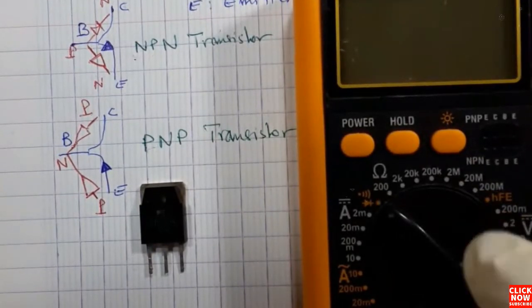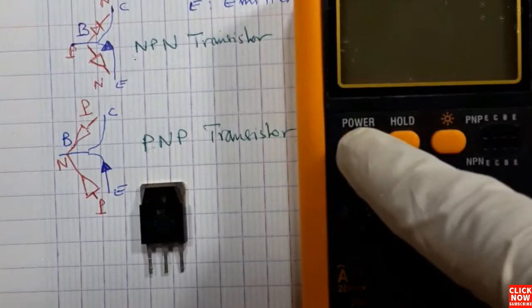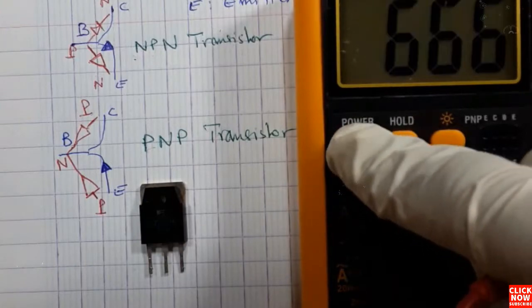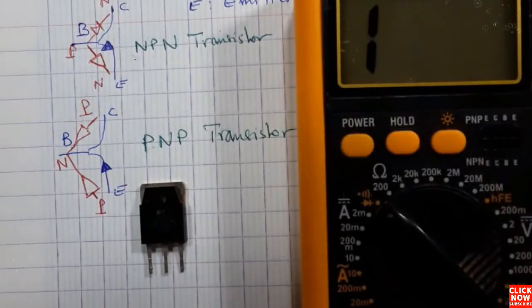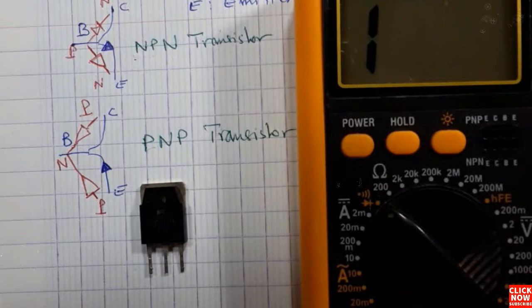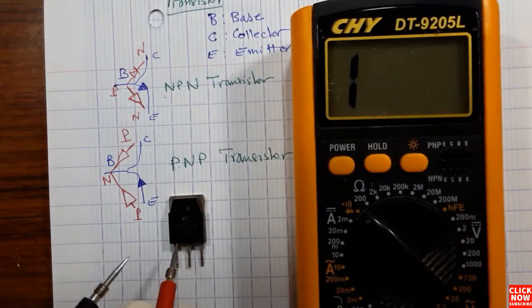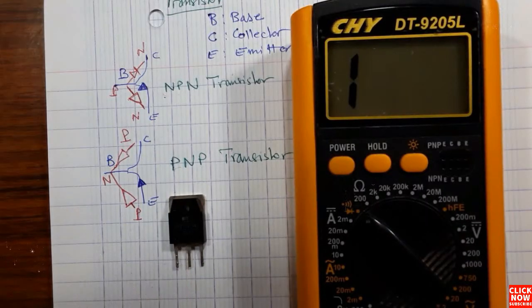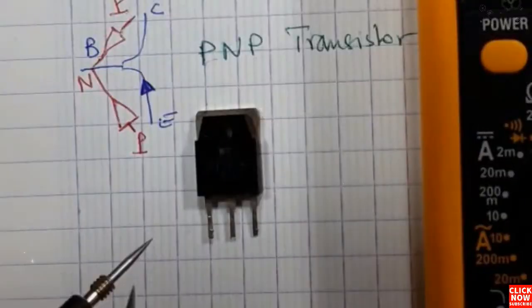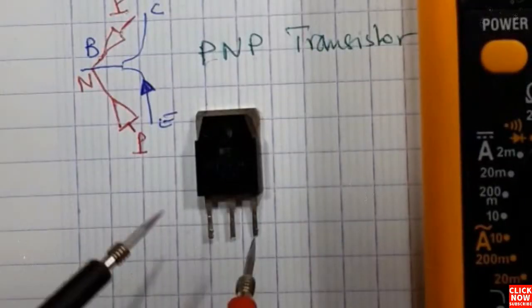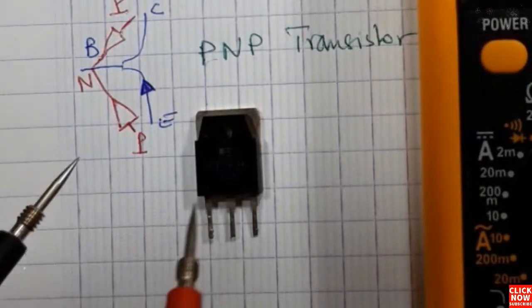First, we're going to select the continuity option in the multimeter, or the buzzer option, as you can see here on the multimeter. And we're going to first locate the base of the transistor.